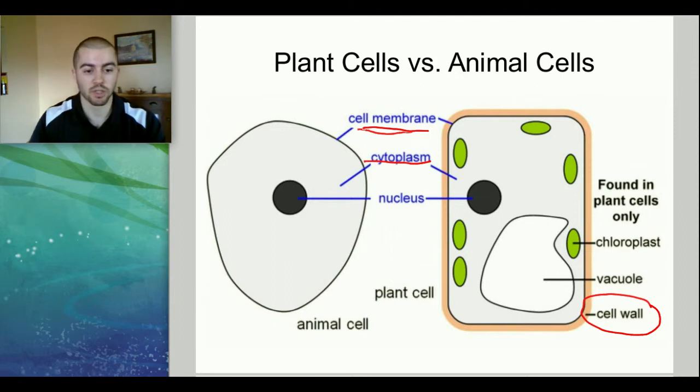A couple other differences with plant cells. They have chloroplasts. Chloroplasts are these little green things that are in charge of the photosynthesis process. These absorb sunlight and sun energy and help drive the photosynthesis process. Animal cells do not have chloroplasts, and that's the main reason that humans and other animals cannot do photosynthesis and make their own food.